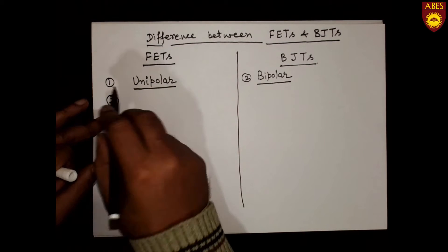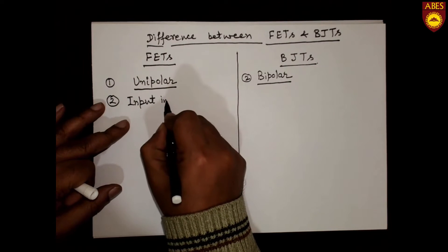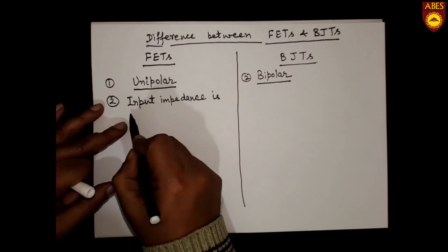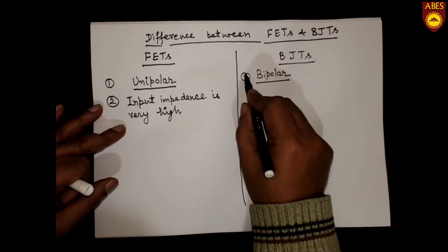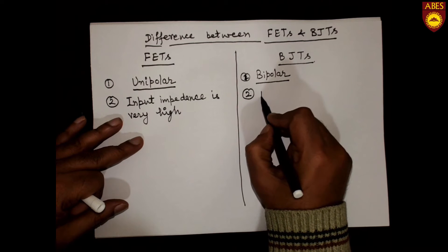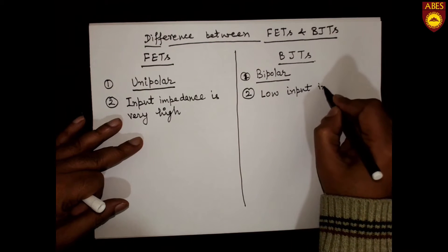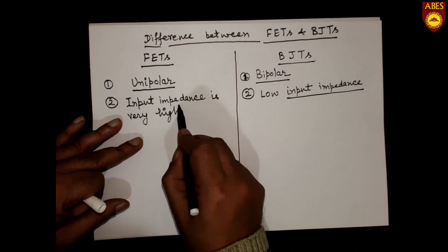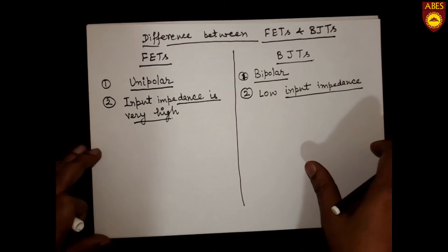The second difference is input impedance. The input impedance of FETs is very high, whereas bipolar junction transistors have low input impedance. Input impedance is a very important factor when designing amplifiers, and for good amplifiers, input impedance should be high.